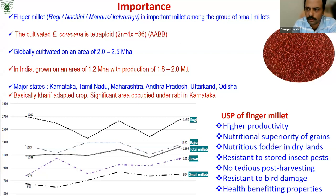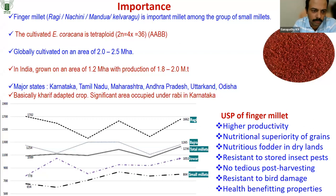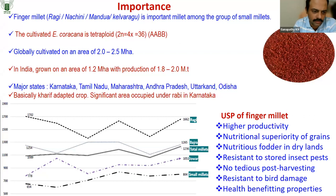Globally, finger millet is cultivated in about 2 to 2.5 million hectares. In India it is grown in about 1.2 million hectares, of which 80% of the area is in one state — Karnataka. Production in India is around 1.8 to 2 million tons.